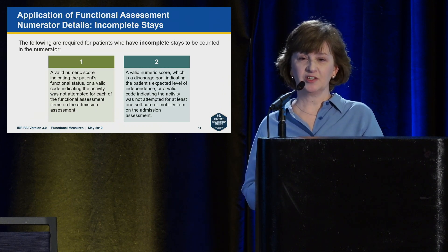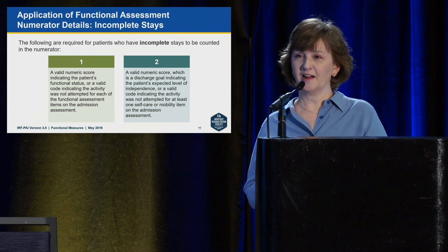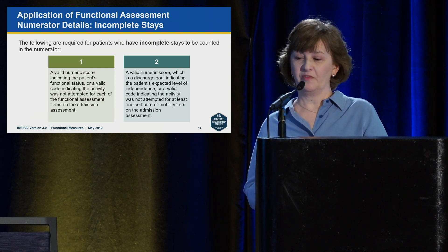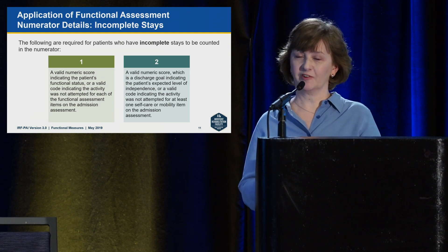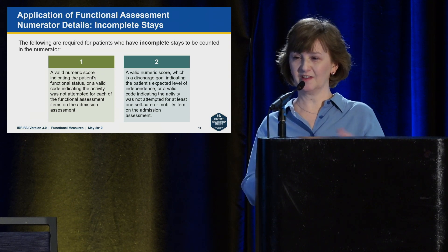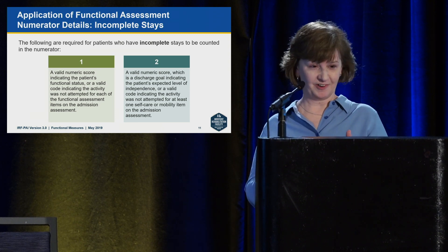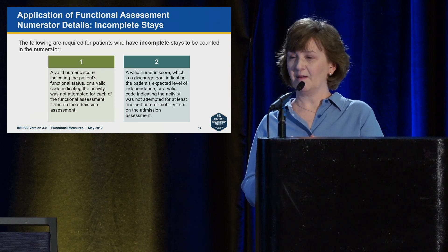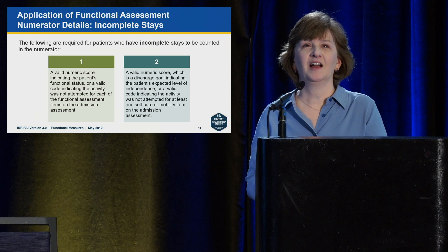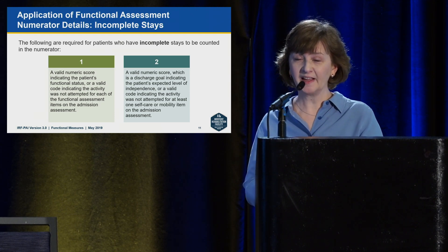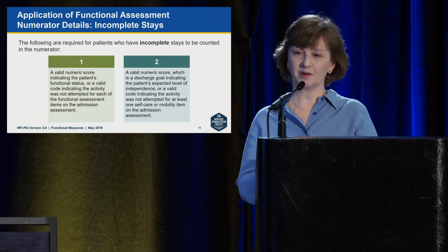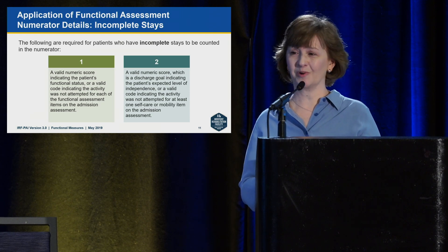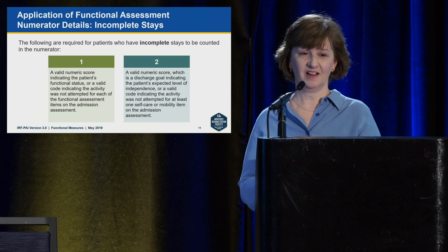In the event that a patient has an unexpected discharge or it's difficult to do a functional assessment at discharge, that's considered an incomplete stay. For example, during a medical emergency you should not be doing a functional assessment — you are only required to do an admission assessment and put in a goal for this quality measure. If somebody is transferred out or passes away very quickly after admission and an initial evaluation hasn't been completed, you still need to put in a goal. It can be based on what you thought the person's goal would be from your pre-evaluation.